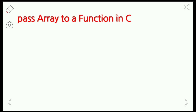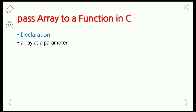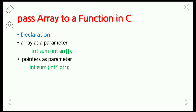In the function call we pass the actual parameters to the formal parameters in the function definition. Here, instead of passing simple arguments, we are passing arrays to a function in C language. The passing of an array to a function is done in two ways: passing an array as a parameter, and passing a pointer as a parameter.